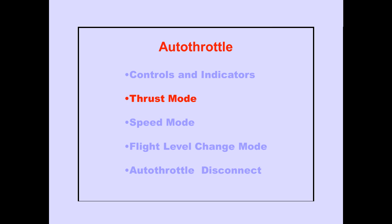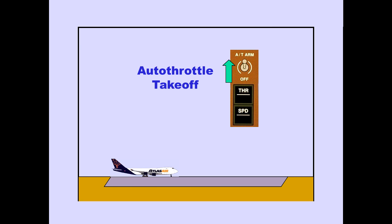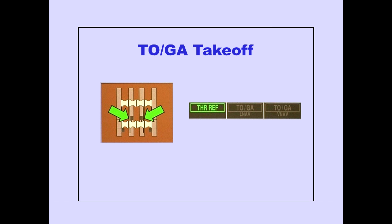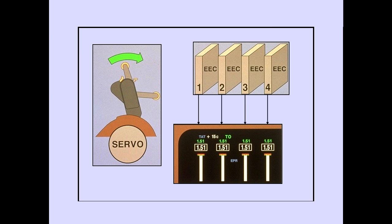Let's look at an example of thrust mode operation during an autothrottle takeoff. First, the autothrottle must be armed. The desired takeoff thrust mode is selected on the FMS-CDU during pre-flight. Pushing a TOGA switch displays thrust reference on the PFD. The autothrottle advances the thrust levers to the selected limit. The servo moves the thrust levers together.